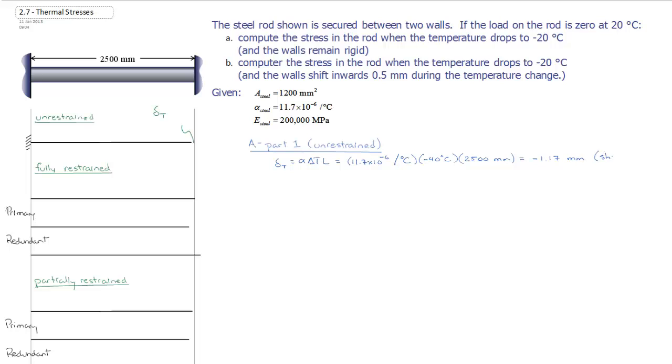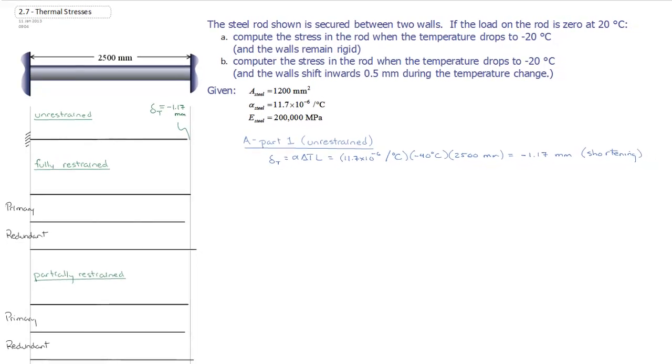The negative, of course, indicates that that is shortening. This really sets us up to understand what we're doing in Part A from a first principles perspective. I'm just going to mark that in here, 1.17 millimeters as my displacement for the fully unrestrained situation.